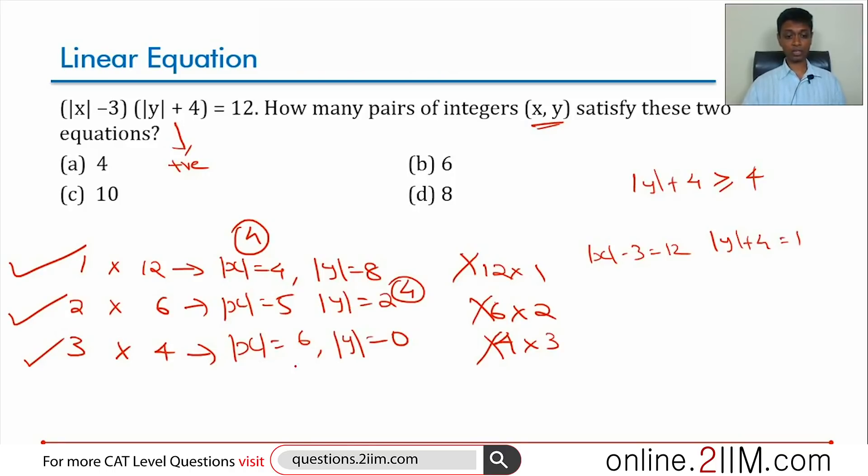|x| is 6, |y| is 0. |y| is 0, y can only be 0. This is (6, 0), (-6, 0). Two solutions possible. 4 plus 4 plus 2: 10 different values possible.